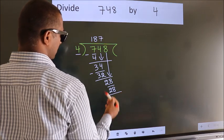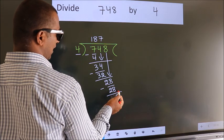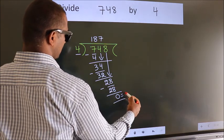Now we subtract. We get 0. No more numbers to bring down, so we stop here. This is our remainder.